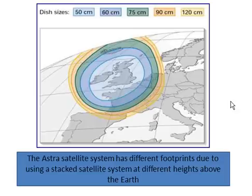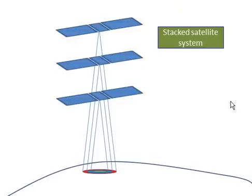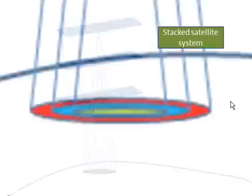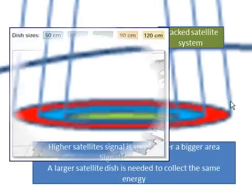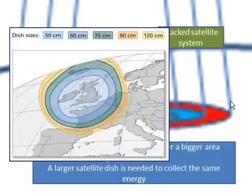The Astra satellite system uses a stacked arrangement of satellites at different heights. Each satellite produces different footprints of different intensities. This means we only need small satellite dishes in the UK, but larger dishes further out into Europe.